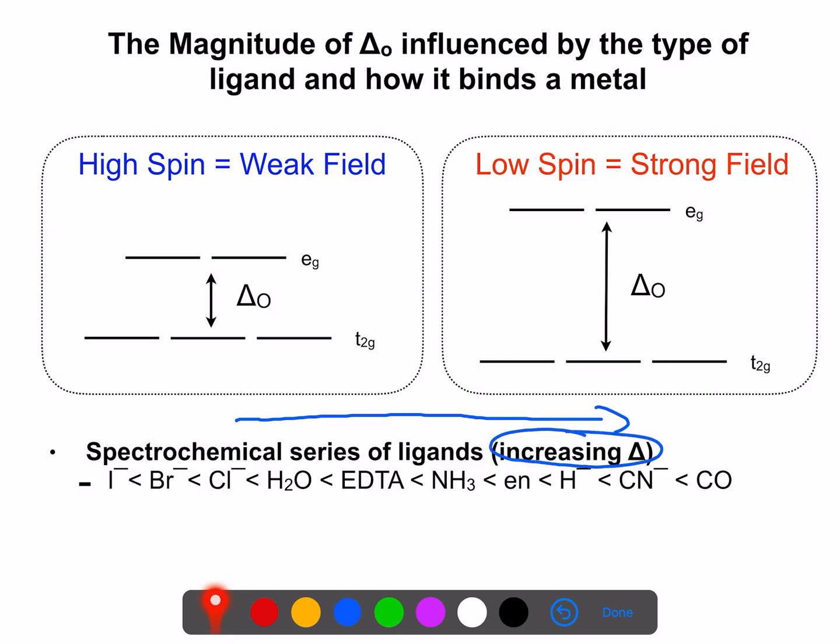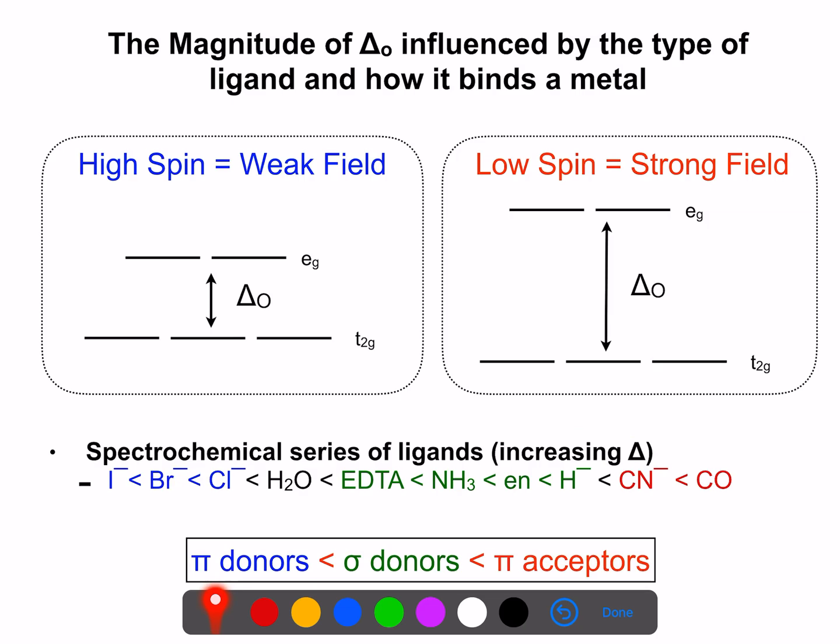Now, if we look a little further at these ligands, and we can start to classify these various ligands as sigma-donating, pi-donating, and pi-accepting, what we can start to see is that the lower ligands on the spectrochemical series are all pi-donor ligands. Things like halides have that lone pair on that atom bound to the metal, which can pi-donate. Water is, in fact, a weak pi-donor ligand.